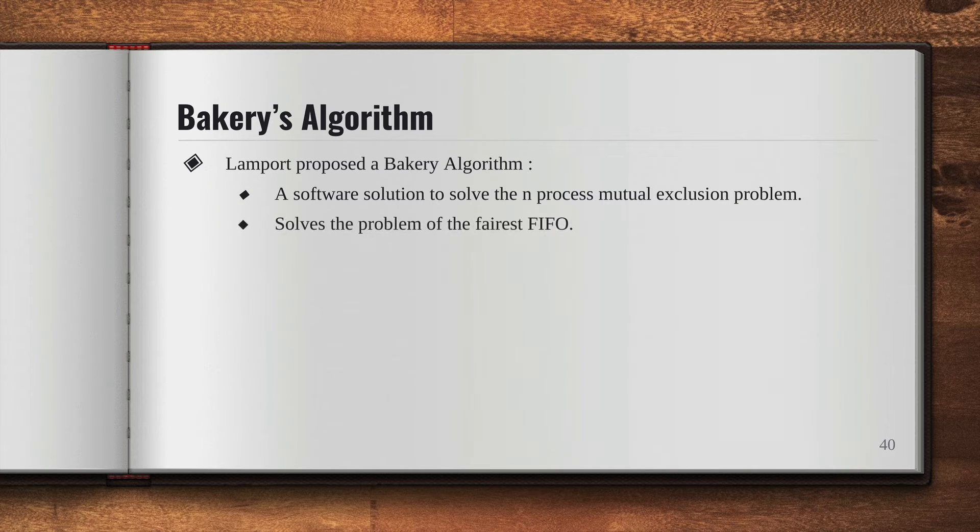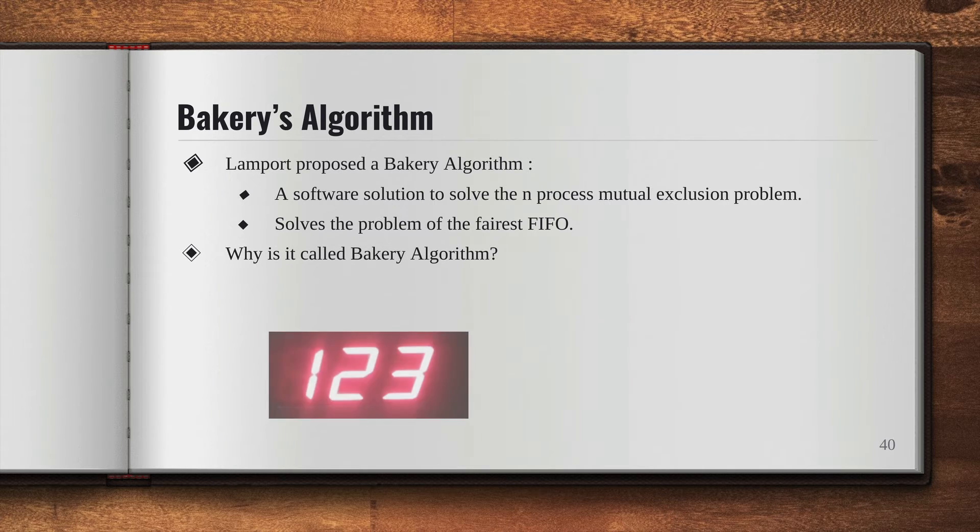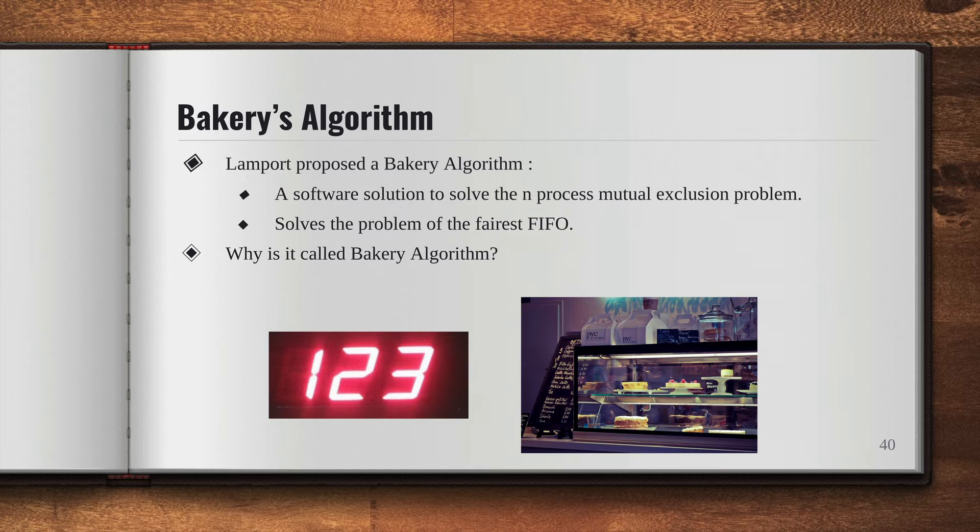It solves the problem of the fairest FIFO, which is first in first out. Now why is it called Bakery's algorithm? Let me explain that to you. When a customer goes to a bakery, the bakery manages them on a basis of tokens. So when you enter the bakery, you are given a token number, and then the next person enters, they get a token number as well.